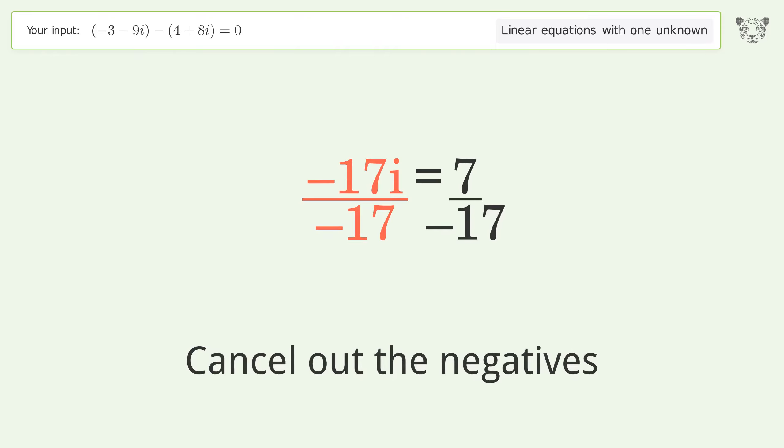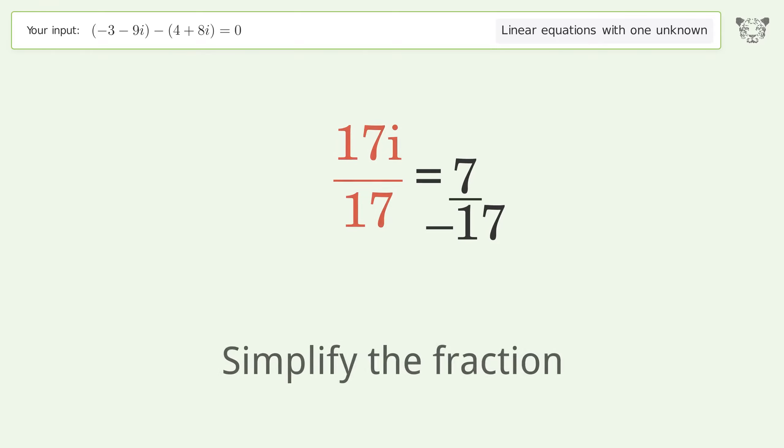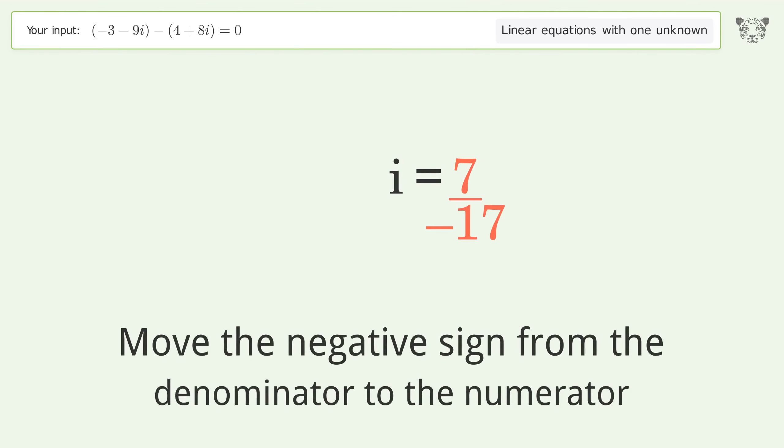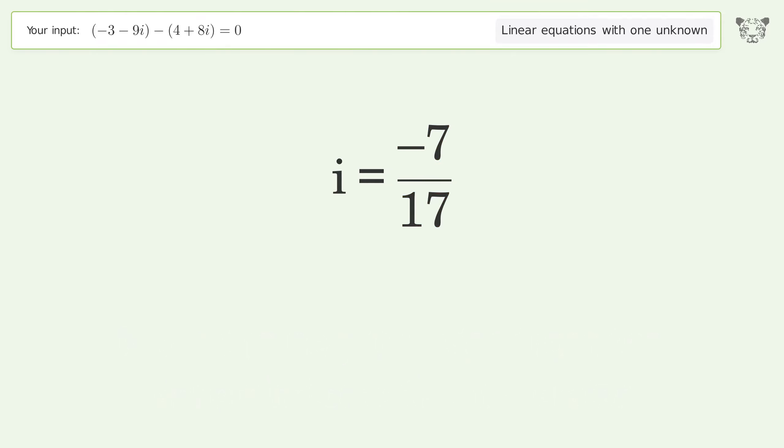Cancel out the negatives. Simplify the fraction. Move the negative sign from the denominator to the numerator. And so the final result is i equals negative 7 over 17.